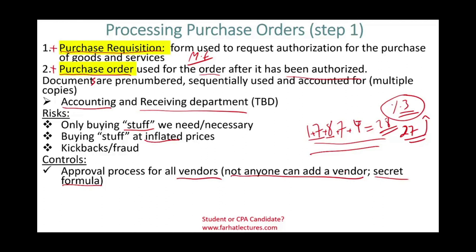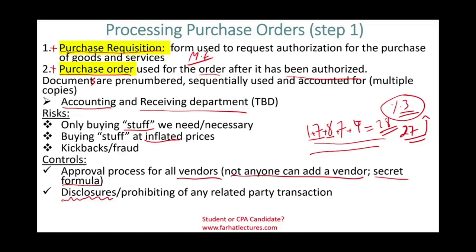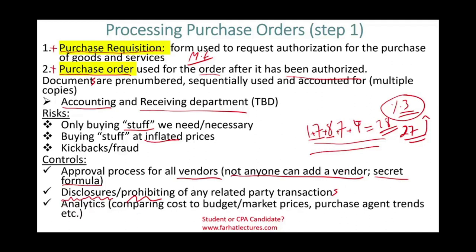You can also use analytics at this stage — comparing cost to budget to see if costs exceed budget, or comparing prices we're paying to market prices to see if we're paying fair prices. We can also run analytics on purchasing agent trends. For example, if we can see an agent is buying more than others, or buying a disproportionate amount from a specific vendor, that's going to be a red flag.